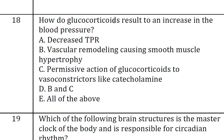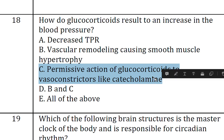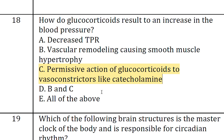The eighteenth question: how do glucocorticoids result in an increase in blood pressure? The answer is C, permissive action of glucocorticoids on vasoconstrictors like catecholamines. That is how glucocorticoids result in an increase in blood pressure.